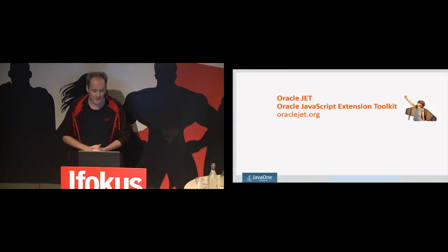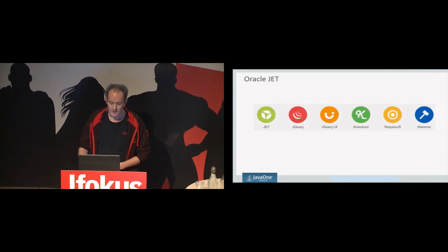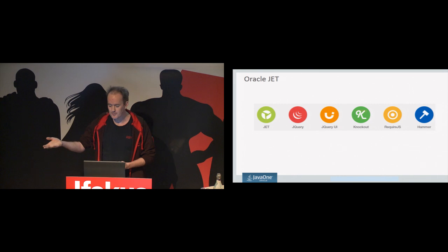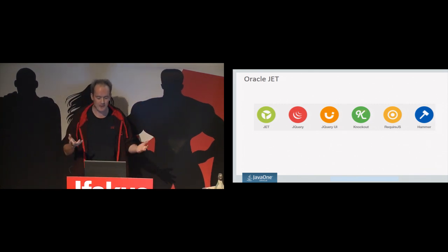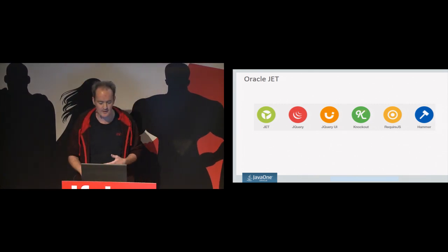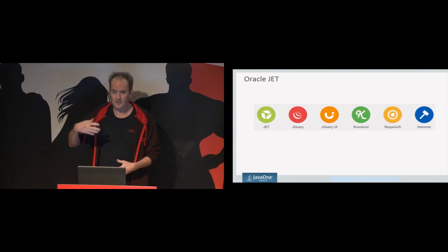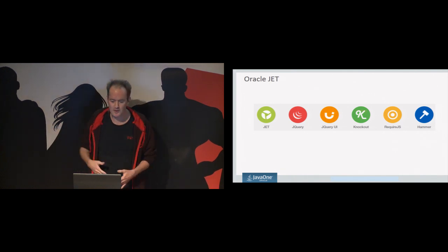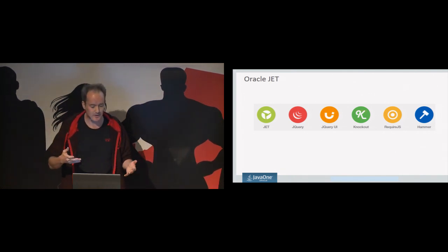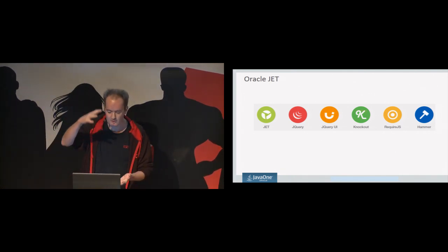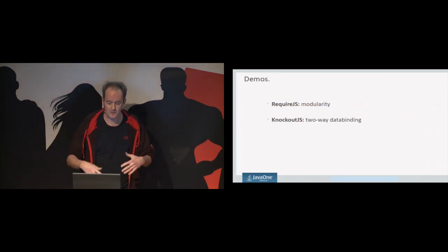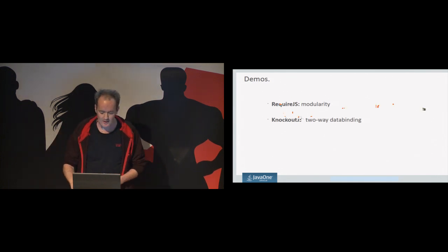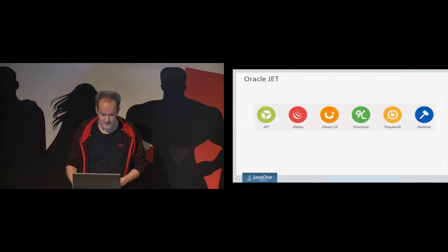Oracle Jet — Oracle JavaScript Extension Toolkit — is based on these libraries: Hammer for touch on devices, Require for modularity, Knockout for two-way data binding, jQuery UI for the components. And once Web Components and Polymer become more stable, we'll move to those specifications. Normally at this point I would do demos to introduce you to Require and Knockout before going into Jet, but since we have very little time, let's move on.